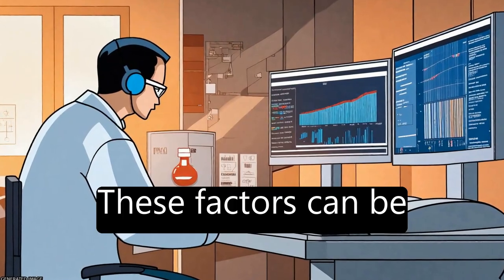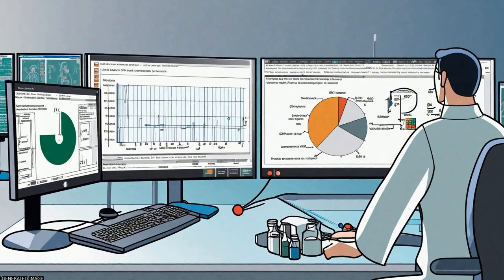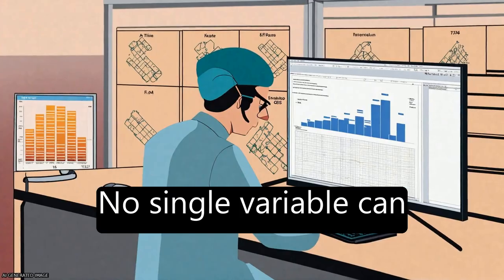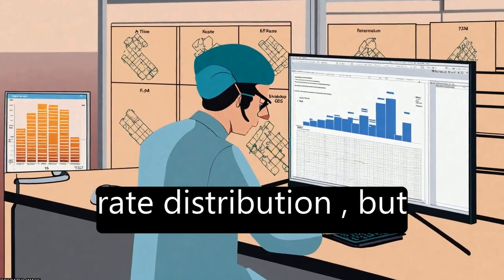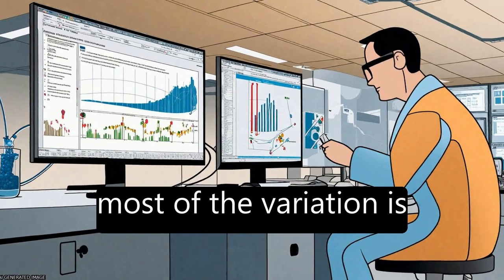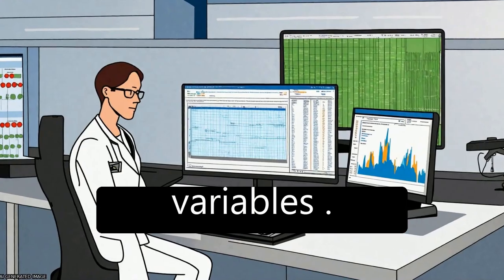These factors can be described by considering seven variables. No single variable can account for the error rate distribution, but most of the variation is explained by the combination of all seven variables.